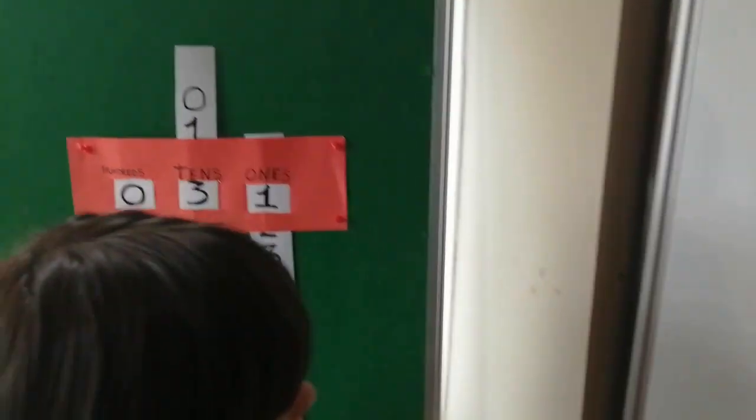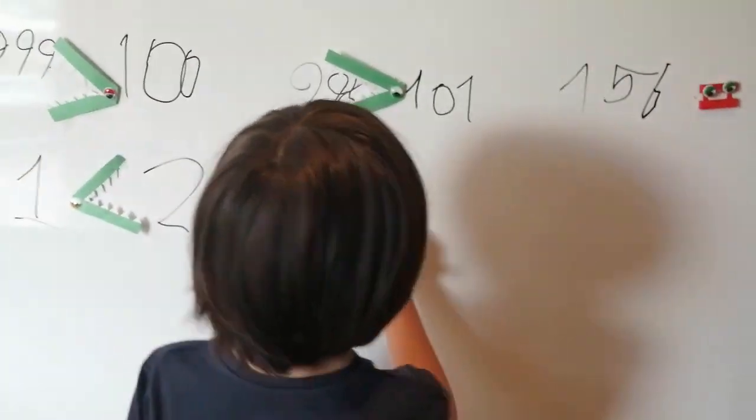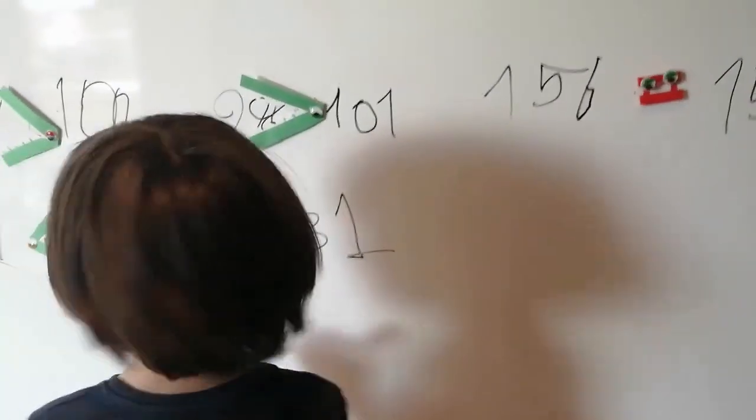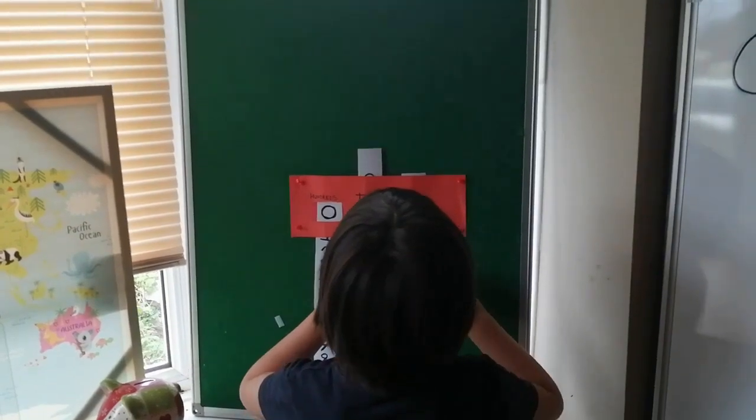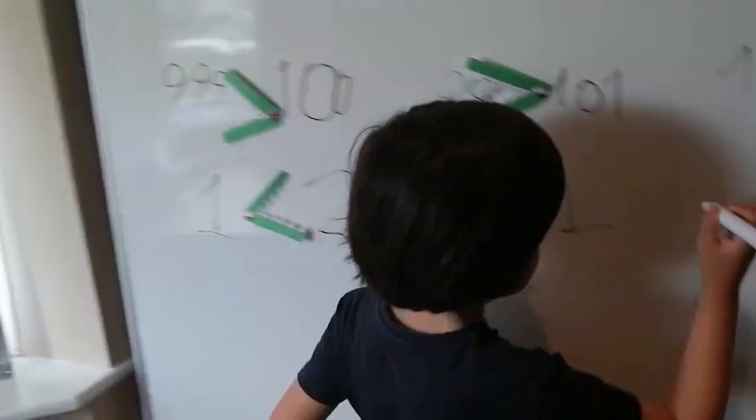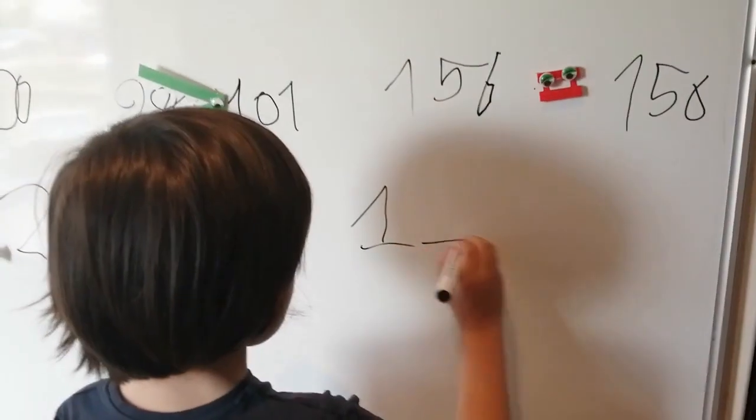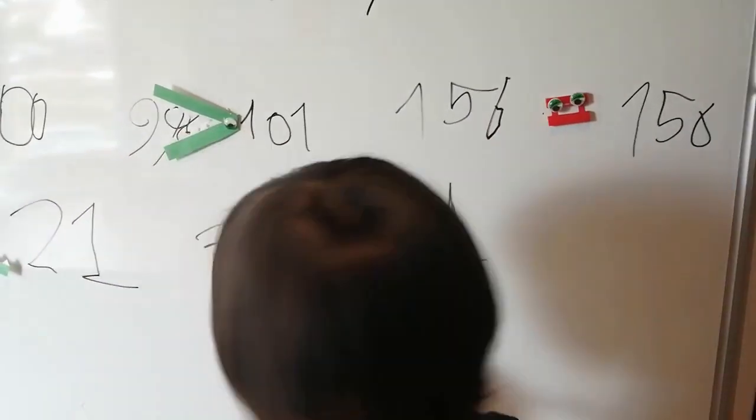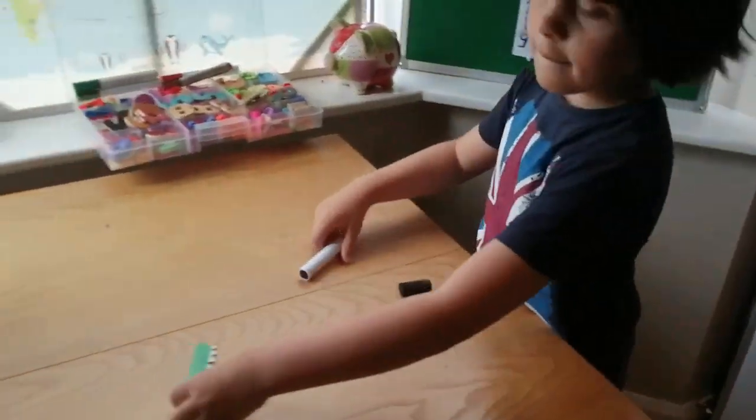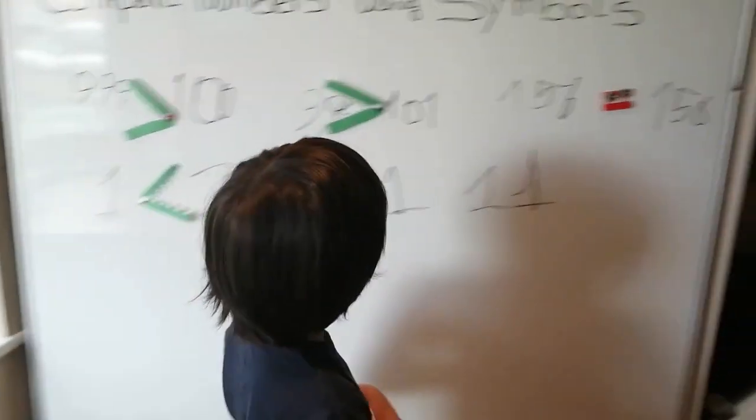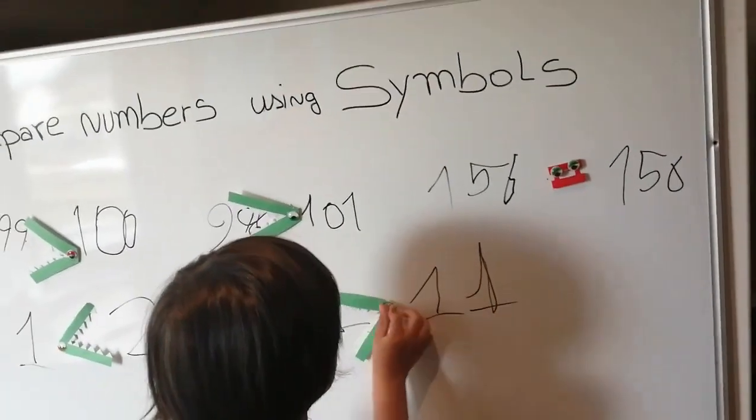So the next one is? Thirty-one. Thirty-one. The next one is? Eleven. Eleven. Okay. The crocodile is going to eat what? The crocodile always eats the bigger numbers.